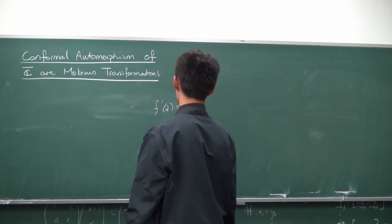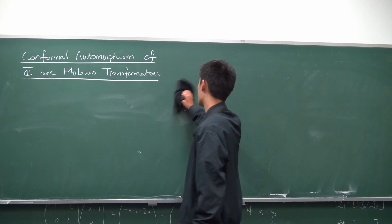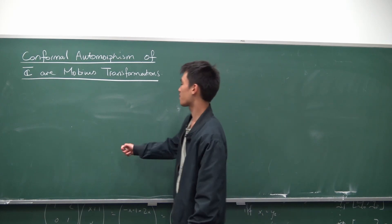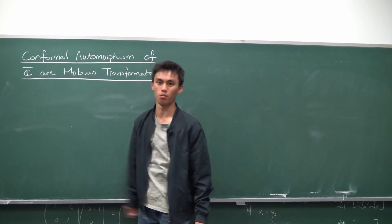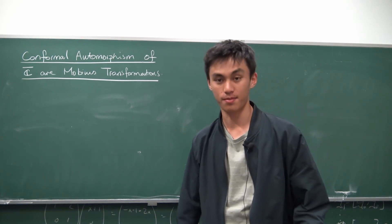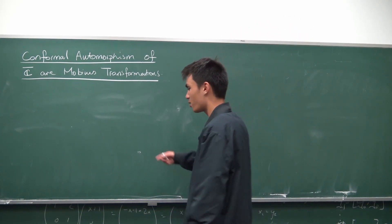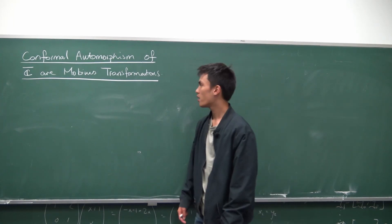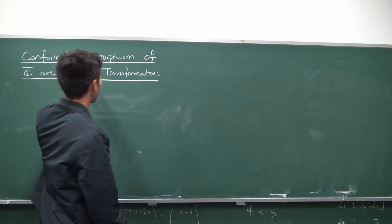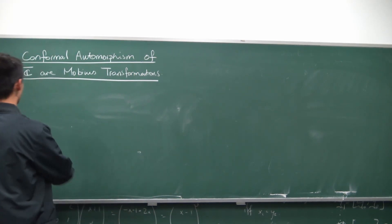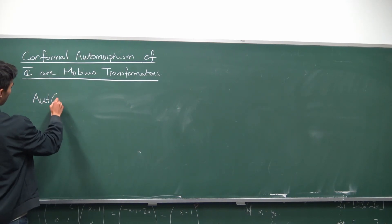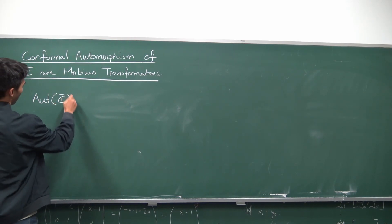What exactly is an automorphism? In this case, automorphism just means that your function is bijective and it's conformal both ways — so it's preserving this conformal property. Last time we took a look at conformal automorphisms of just C, the complex plane, and those turn out to be just the linear maps. So today we're taking a look at the same thing but with C-bar, so we're adding the point at infinity. And it turns out those are precisely the Möbius transformations. Conformal automorphisms of C-bar, you usually denote it Aut(C-bar).